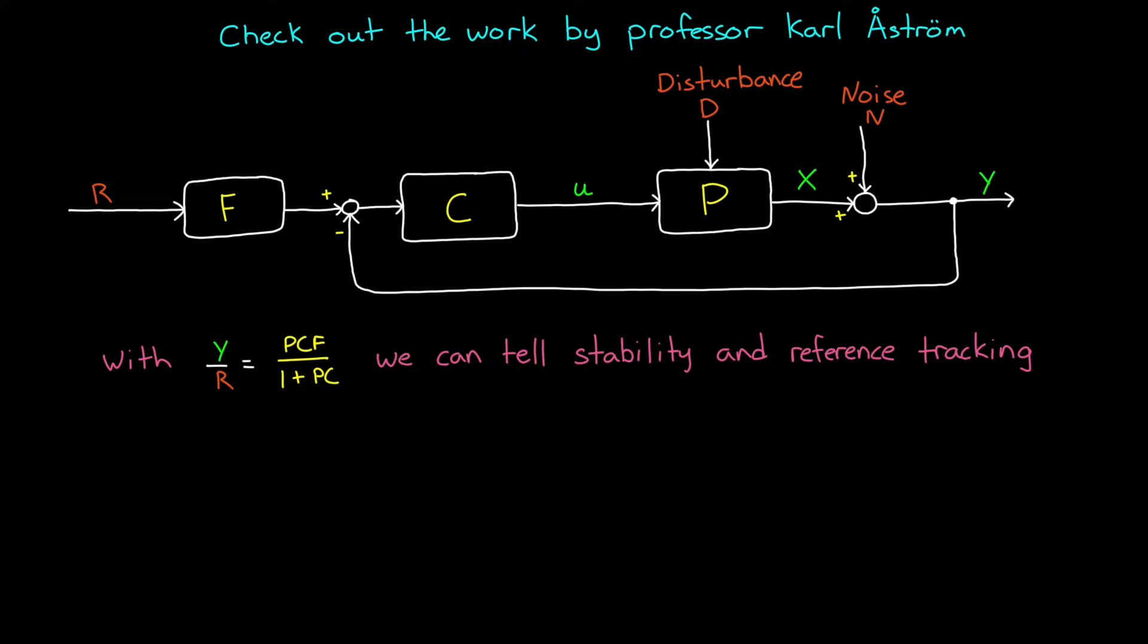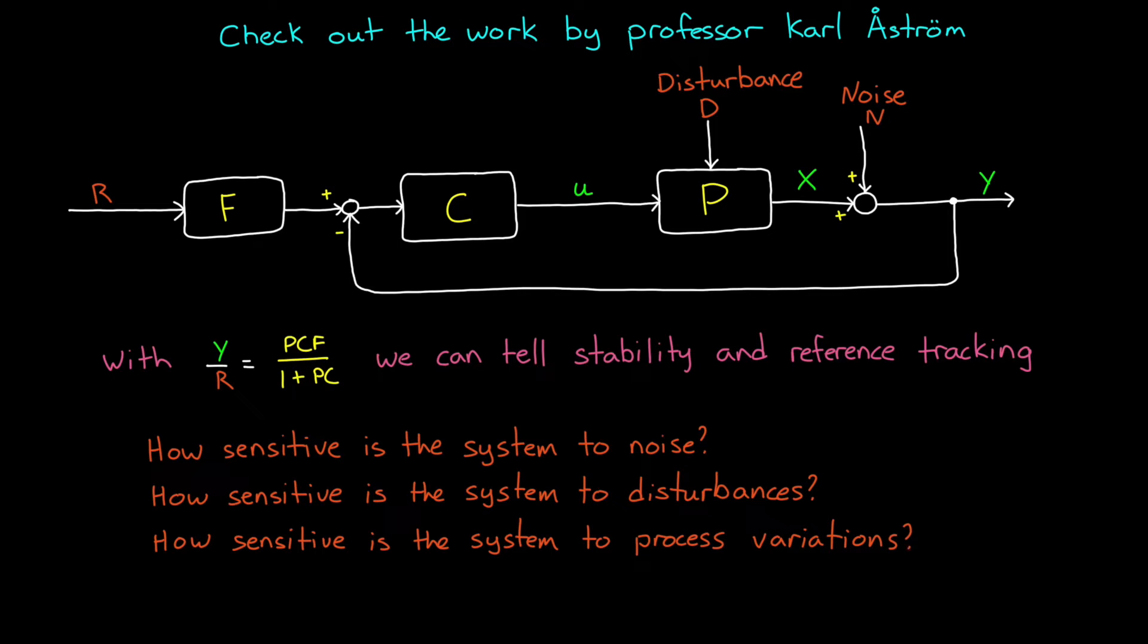So in this way, both noise and disturbances have a physical impact on how the system behaves. With this understanding, we can now ask ourselves additional questions like how sensitive is our system to noise? And how sensitive is it to disturbances? And how sensitive is the system to process variations? That is, the difference between how the process really behaves and how we've modeled it. And answering these questions can be accomplished by looking at the different relationships between each of the external inputs and each of the system signals that we're interested in.